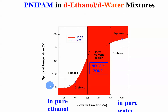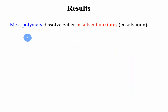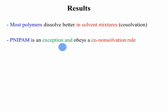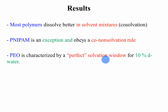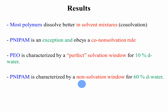There's the measured phase diagram. In the case of co-solvation, the mid-region is perfectly mixed. In the case of co-non-solvation, the mid-phase region is completely demixed — it doesn't mix at all between 40 and 80 percent water. By the way, most polymers follow the co-solvation rule, while NIPAM is an exception and follows the co-non-solvation rule.